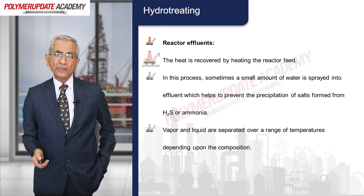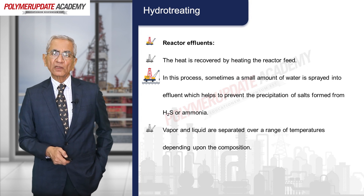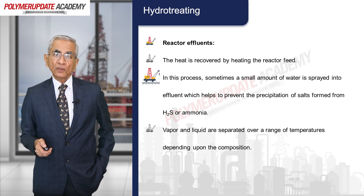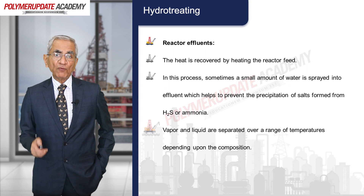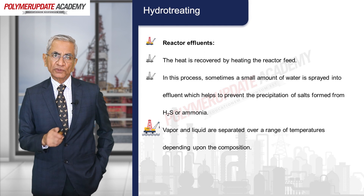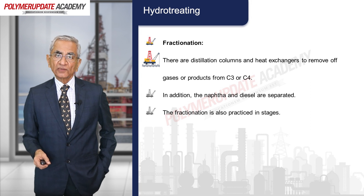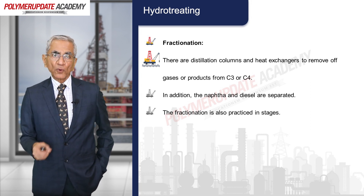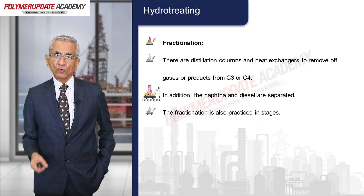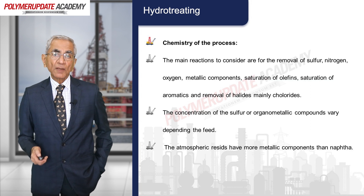Regarding reactor effluents, heat is recovered by heating the reactor feed. Sometimes a small amount of water is sprayed into the effluent, which helps to prevent the precipitation of salts from H₂S or from ammonia. Vapor and liquid are separated over a range of temperatures depending upon the composition. Fractionation or distillation columns and heat exchangers remove off-gases and products from the C3 or C4 streams; naphtha and diesel are also separated by fractionation, frequently practiced in stages.